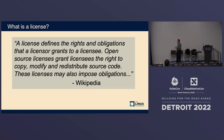An open source license gives licensees — the users of the code — the right to copy, modify, and redistribute. Those three things are very important and essentially define what makes something open source. It's also very important that most licenses have obligations.